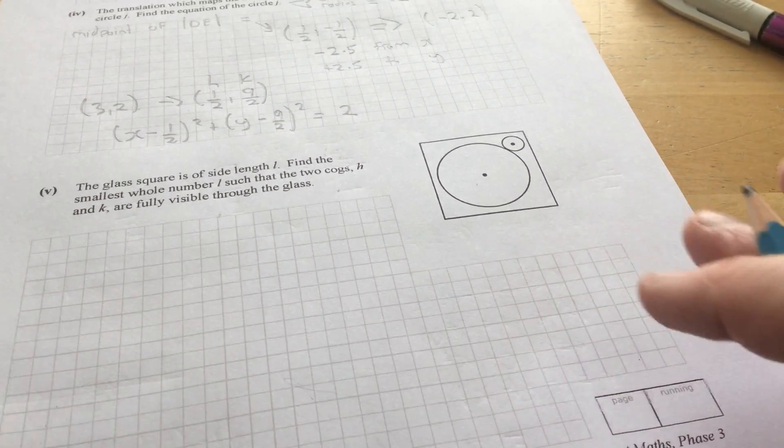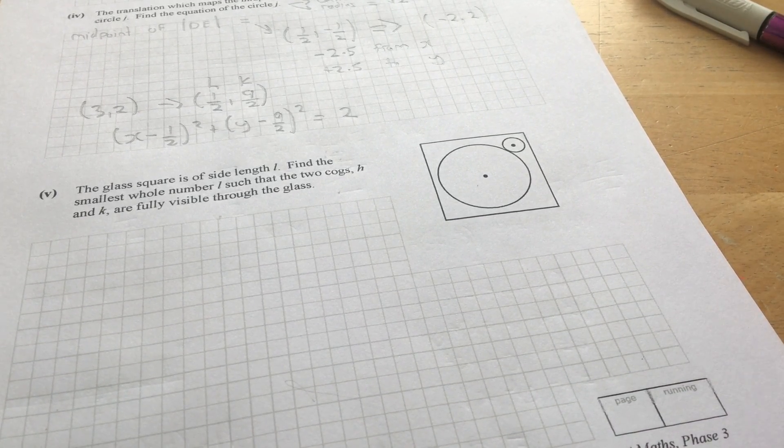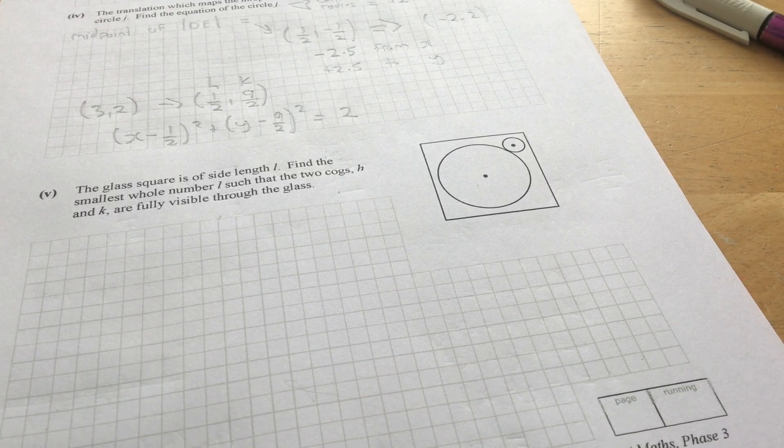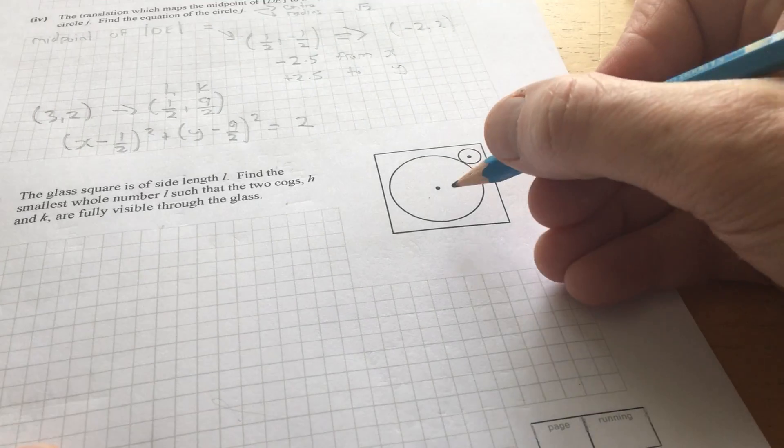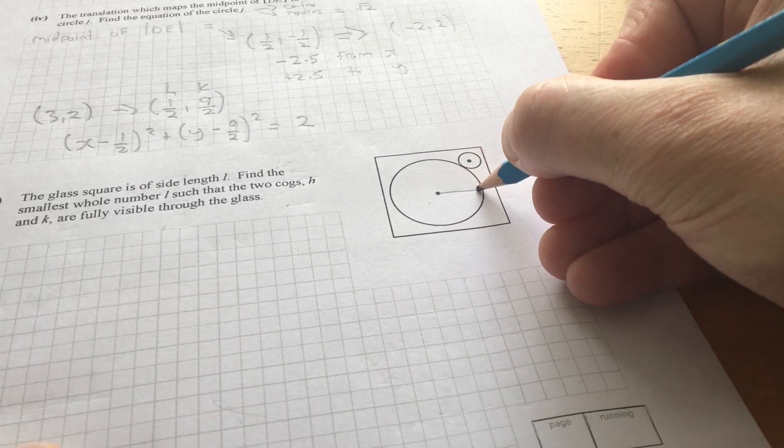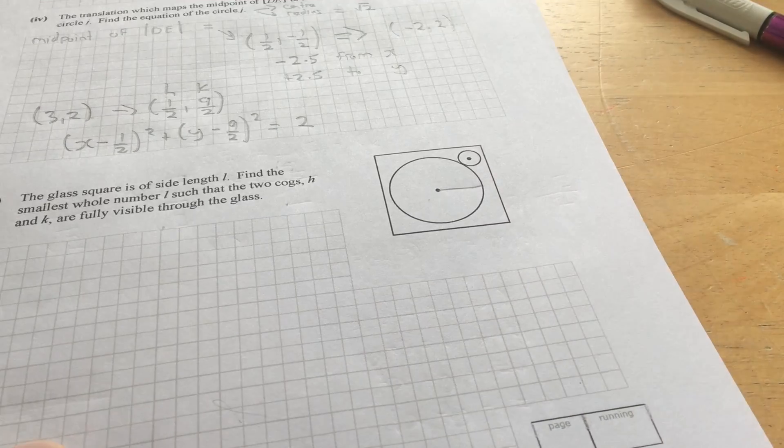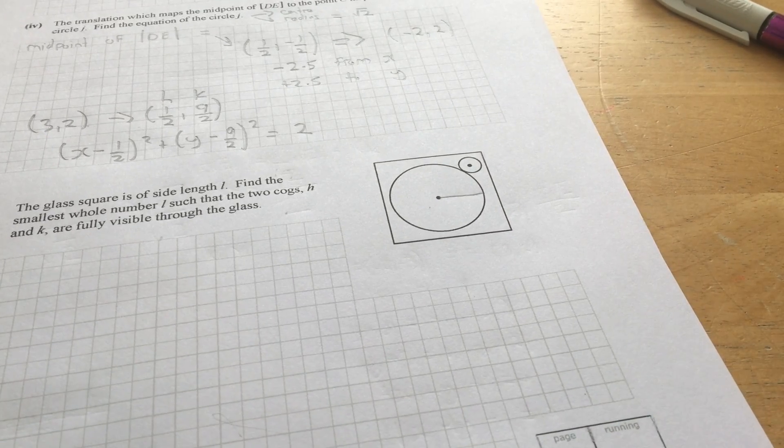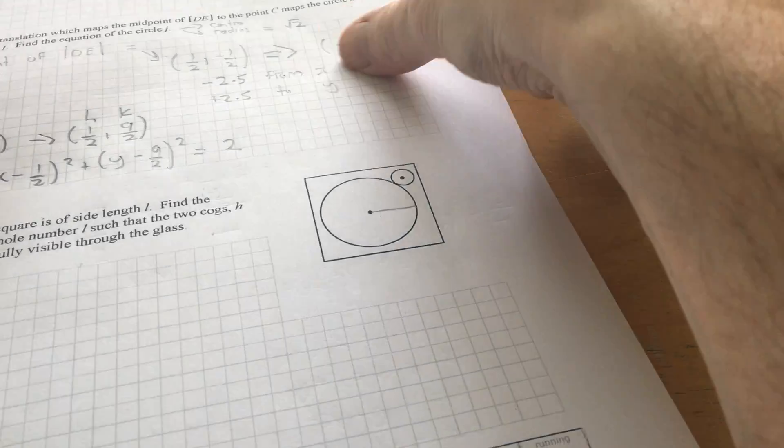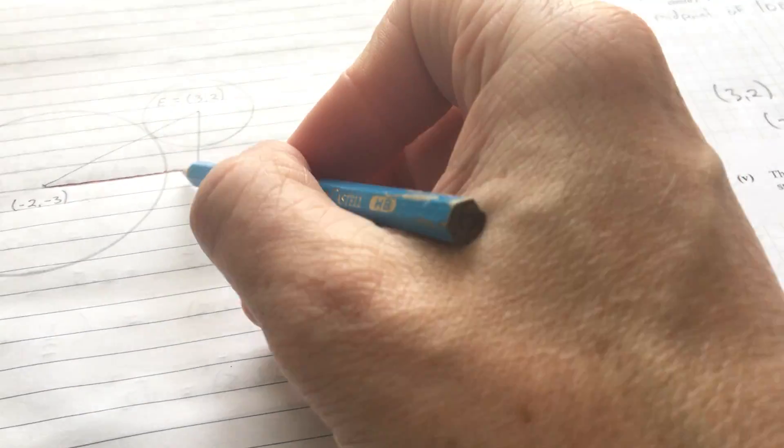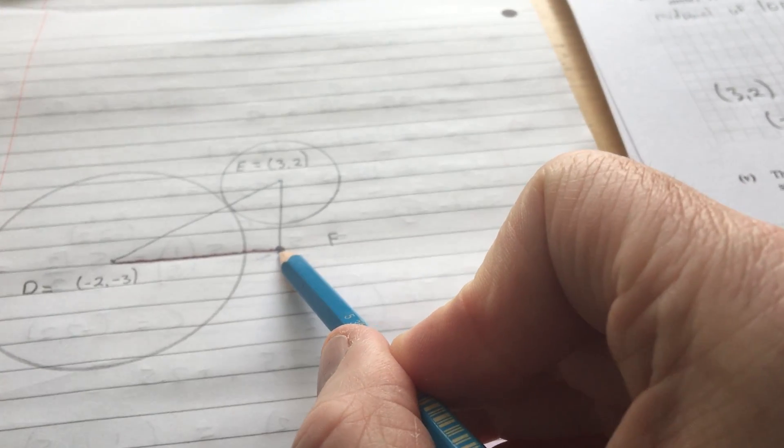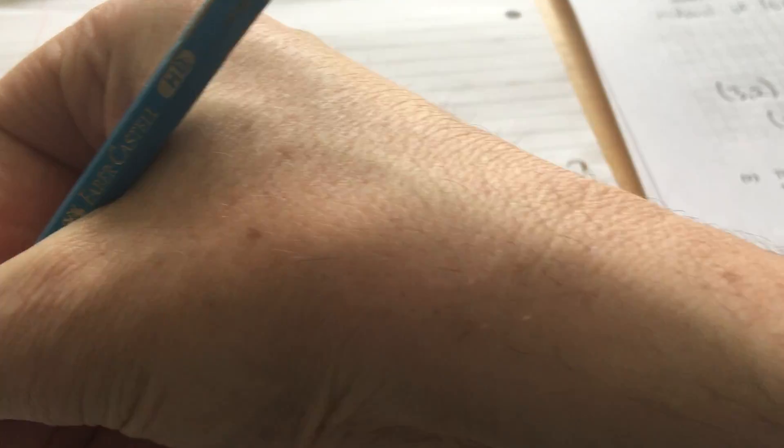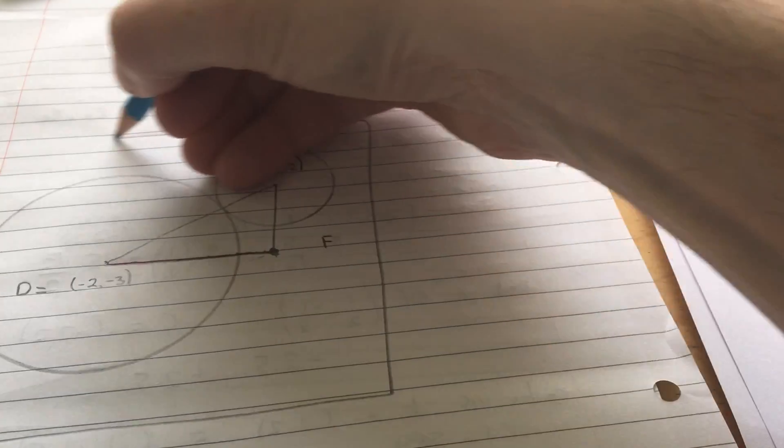Now, the glass square is of side length L. And I found the smallest whole number J. So, it's the two cogs, H and K, are fully visible through the glass. Okay. So, if you look at this little bit here, there's actually... And the diagram doesn't really kind of show it that well there. So, I just did out a bigger one. See, there will be this kind of area of overlap here. But we have the points. These points we give... I'm just going to call this F, similar to the marking scheme.